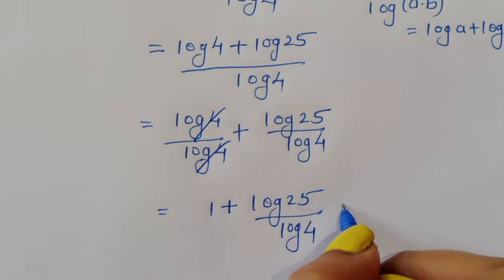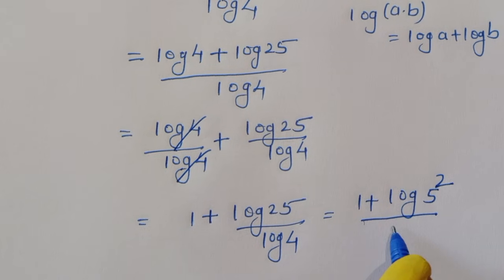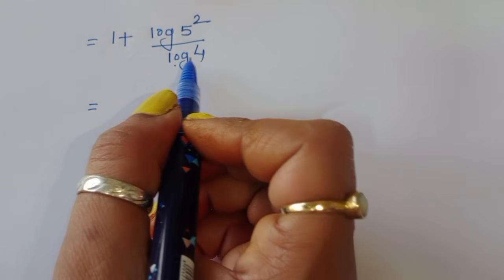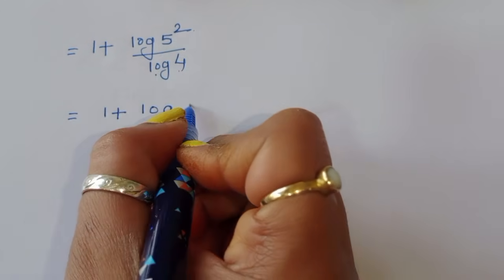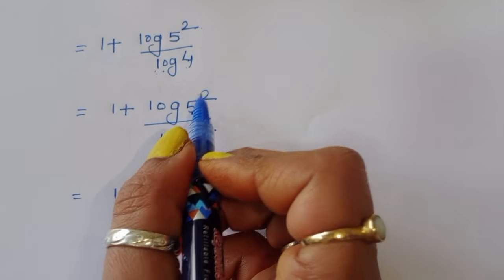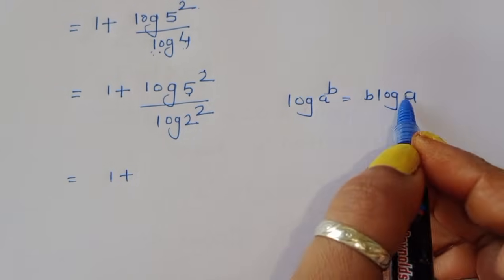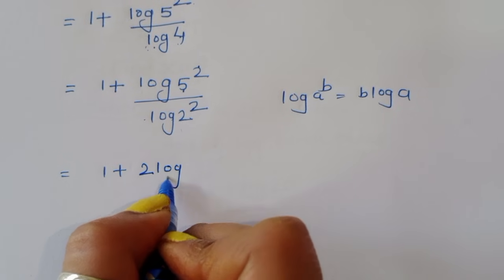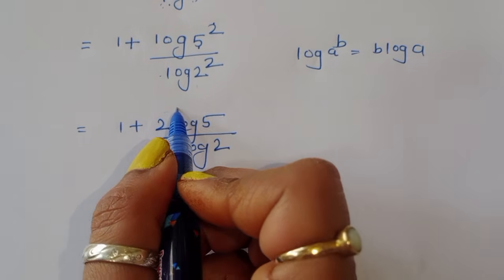Now 25 can be written as 5 squared, so we have 1 plus log of 5 squared divided by log of 4. And log of 4 can be written as log of 2 squared. Using the power rule — log of a power b equals b times log of a — in both numerator and denominator, we get 1 plus 2 log of 5 divided by 2 log of 2. The 2s cancel.